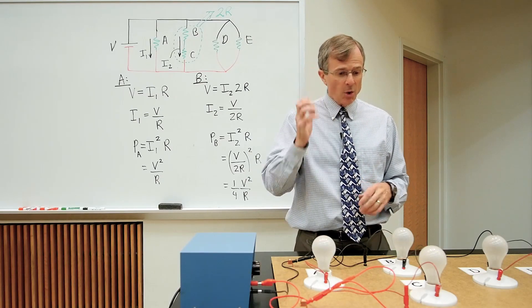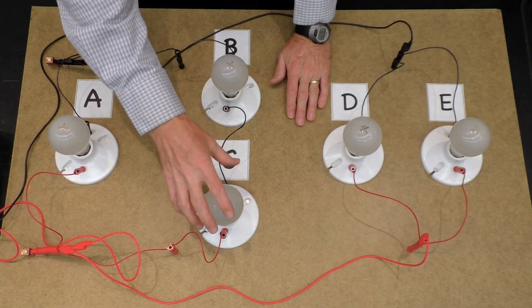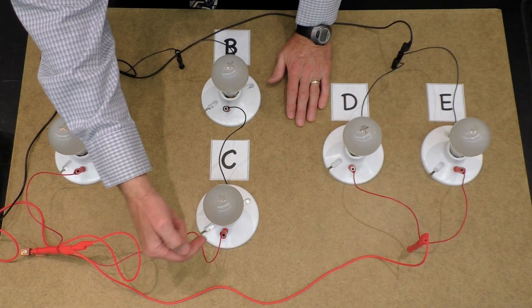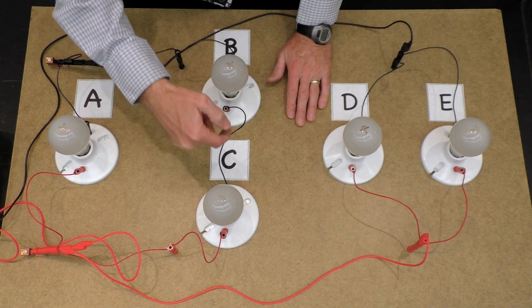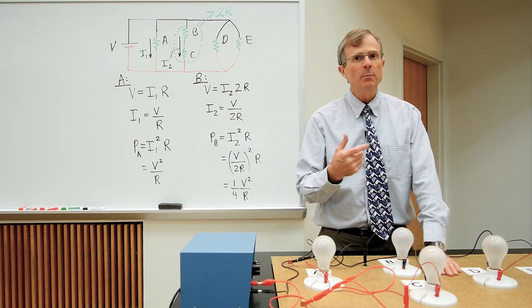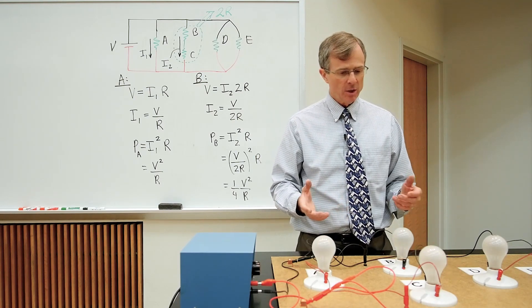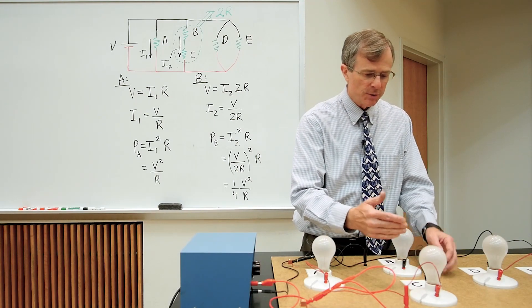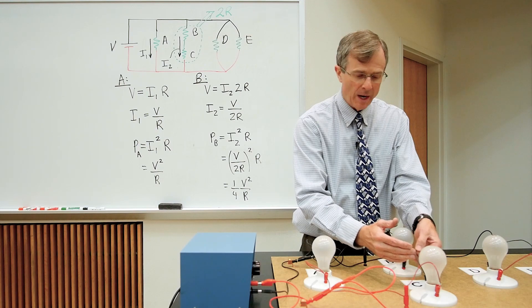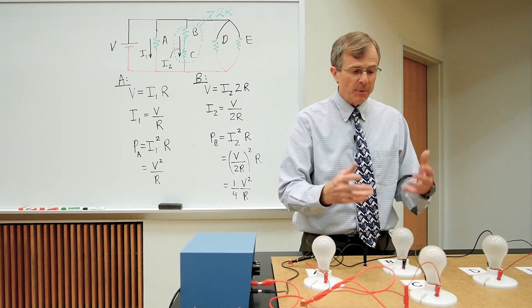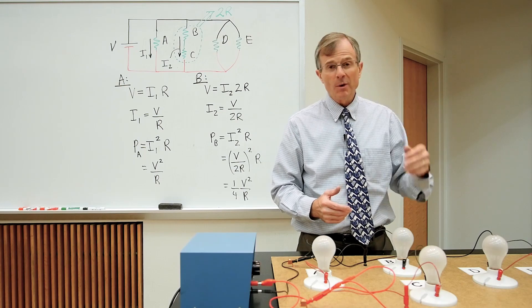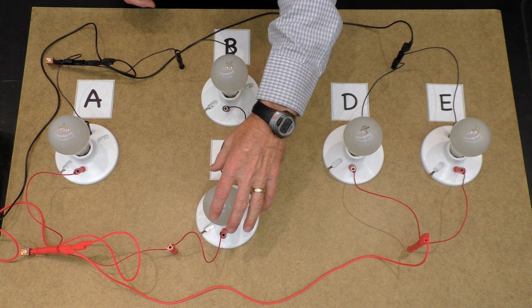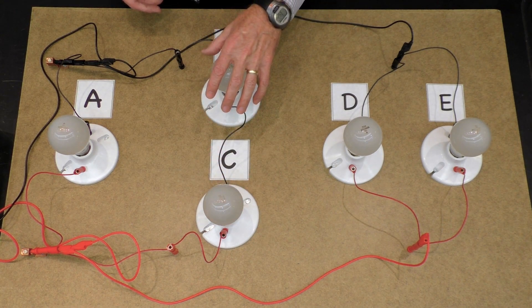And the reason is there's no way for this bulb to use up any current. The current that passes through this one has to pass through the other one. Otherwise, there would be a buildup of charge. Current is a charge divided by a time passing through a wire. If it somehow used it up, it would have to go somewhere, but there's nowhere for it to go. And so, the current that passes through this one must be the same as the current that passes through this one.